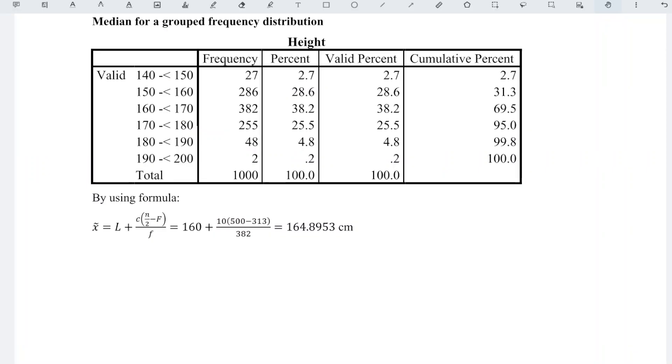If we calculate the median manually by using the formula where median equals lower class boundary plus class size times n over 2 minus cumulative frequency right before the median class over frequency of the median class, we should obtain the value which is different from SPSS.